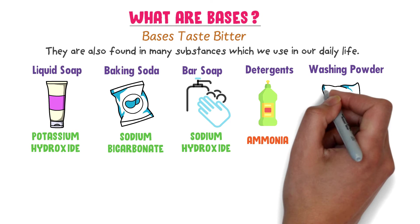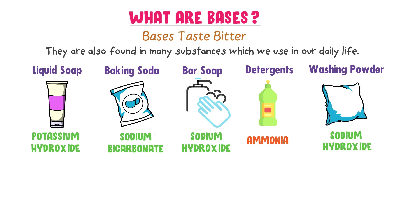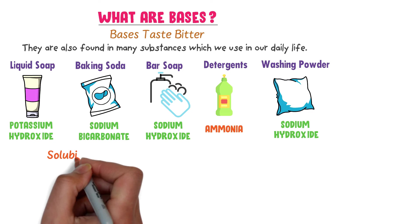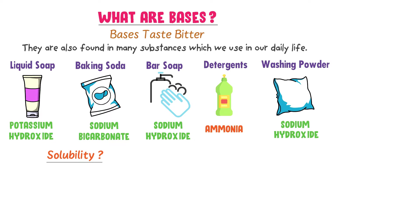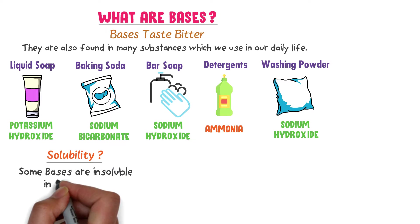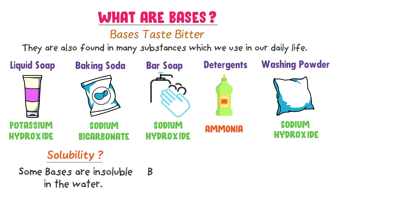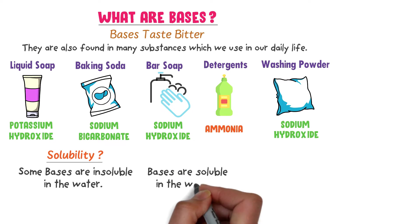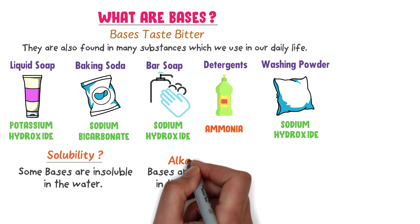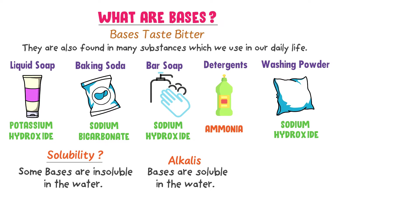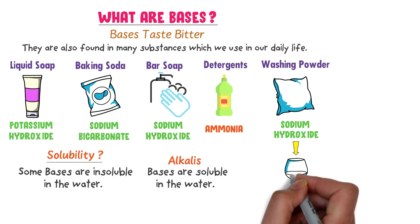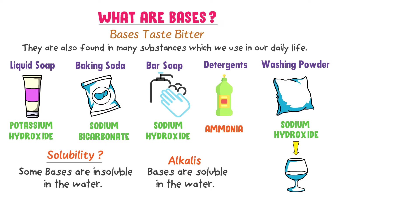Fifthly, washing powder — it contains sodium hydroxide. So, different substances contain different bases. What about the solubility of bases? Well, some bases are not soluble in water. Bases that are soluble in water are also called alkalies. For example, sodium hydroxide in soap is soluble in water, so sodium hydroxide is a base as well as an alkali.